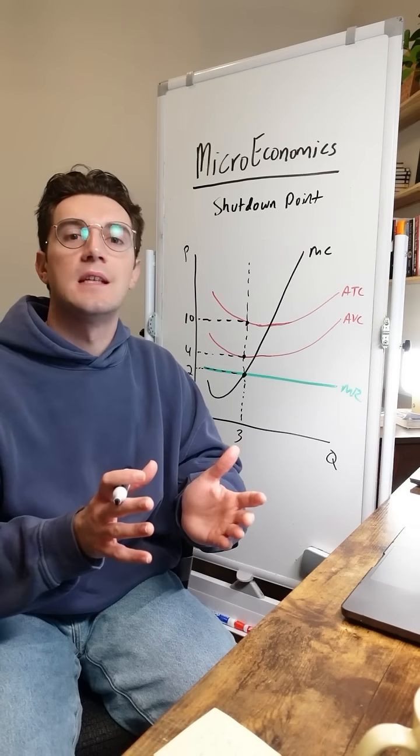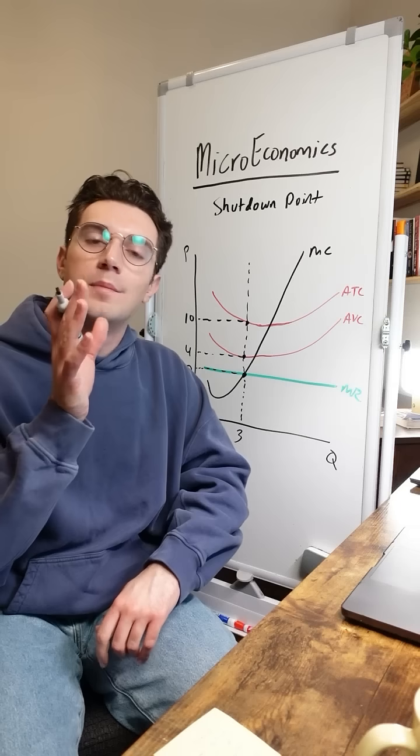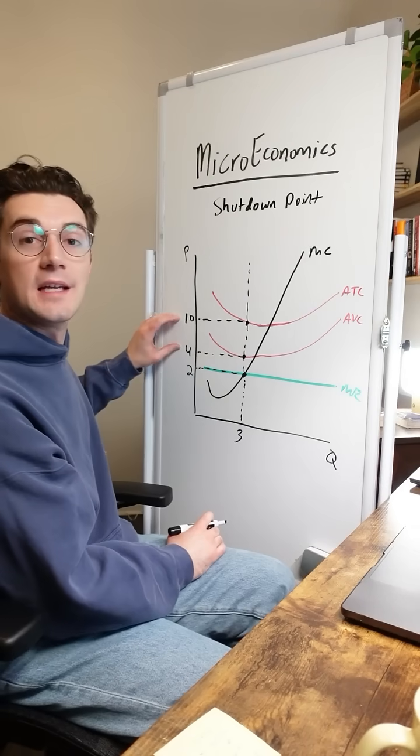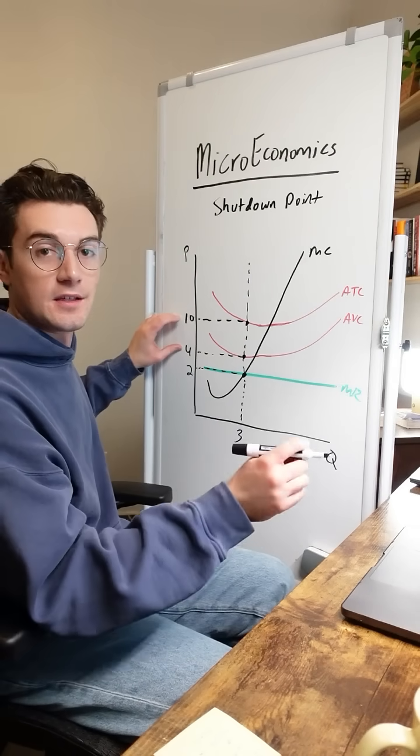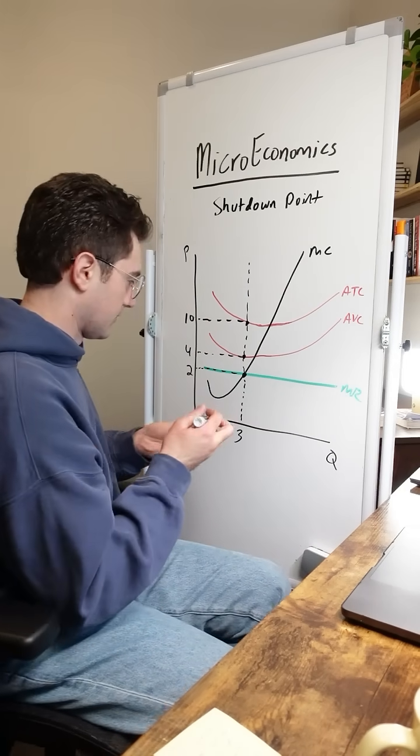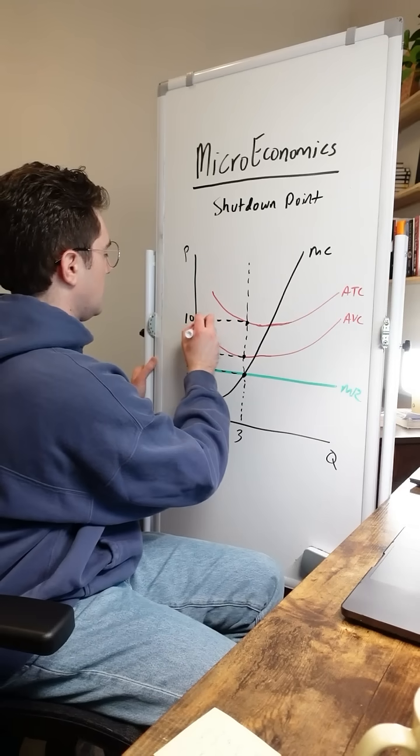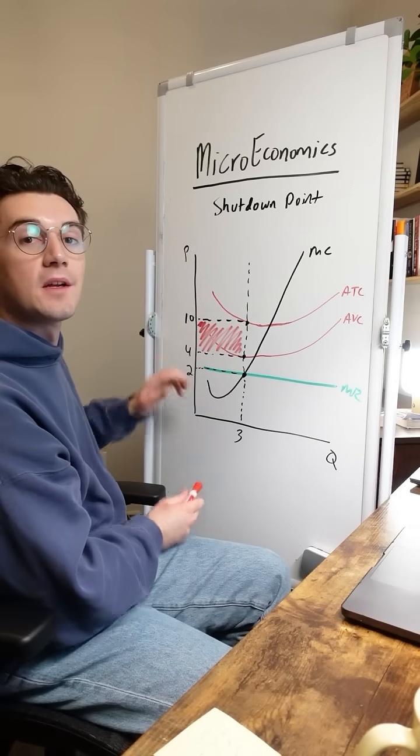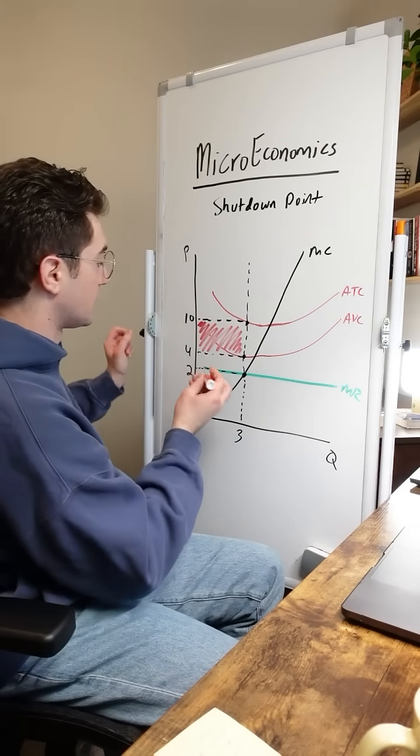So with this considered, you'd want to temporarily shut down your lemonade stand because you'd be better off by just selling no units and solely taking a loss on the fixed cost here. I just want to visualize this with some areas here. This rectangle right here, I shall make it in red. This rectangle right here is the fixed cost of our firm.